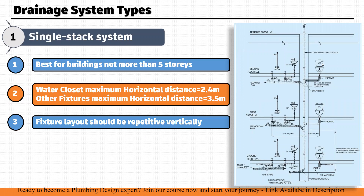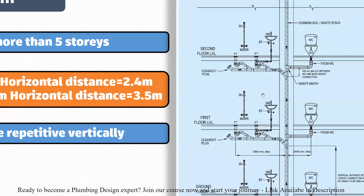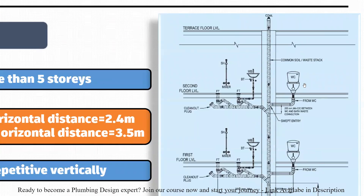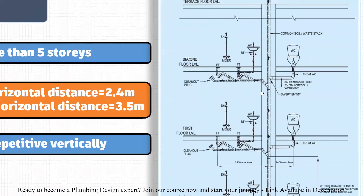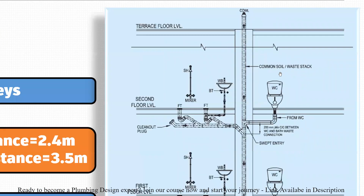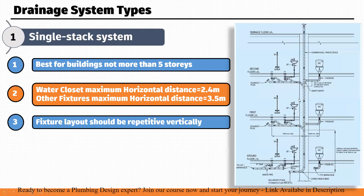As you can see in this figure, on each floor we have plumbing fixtures placed. The drainage from these fixtures is connected to a single pipe that we call a common soil or waste stack. That means soil water and waste water from non-toilet fixtures all drain into this one common stack, which then exits the site.